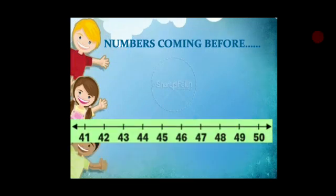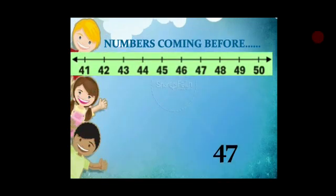Now let me take another number from the number line. I have taken the number 47. So what will come before 47? 46. Here also 46 is smaller than the number 47.